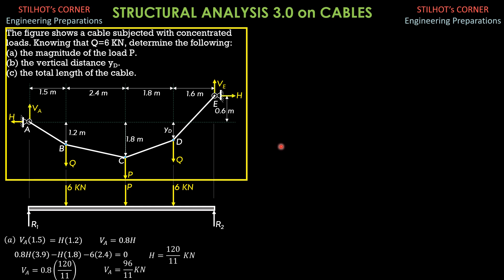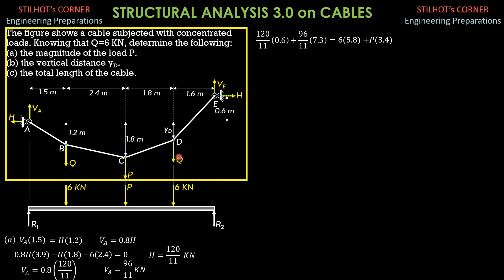Having found H and V sub A, we then sum moments about E considering the entire system to solve for P. It equals H, which is 120 over 11, times 0.6, plus V sub A, 96 over 11, times 7.3 — since 1.5 plus 2.4 is 3.9, plus 1.8 is 5.7, plus 1.6 is 7.3. This equals 6 times 5.8 plus P times 3.4 plus Q which is 6 times 1.6. Only P is the unknown here, and solving gives P is 7.604 kilonewtons.